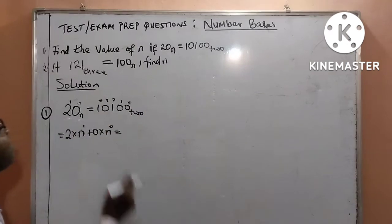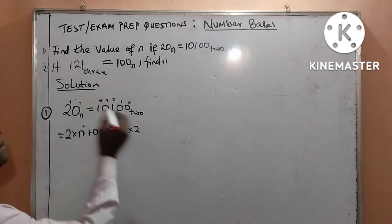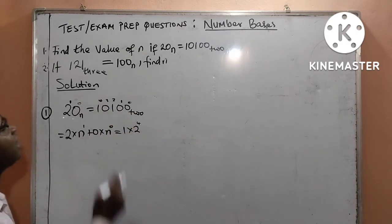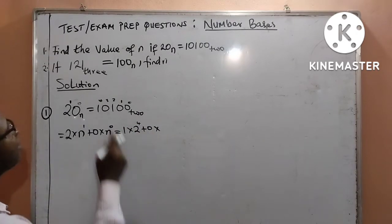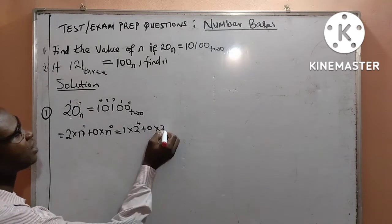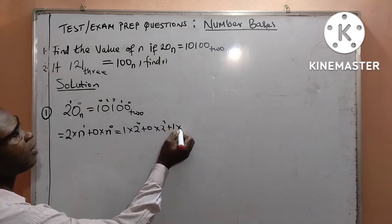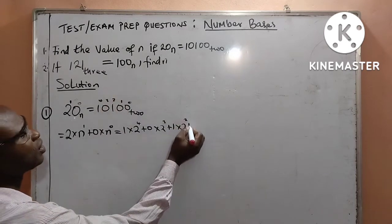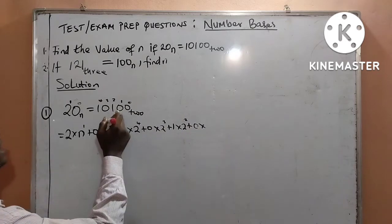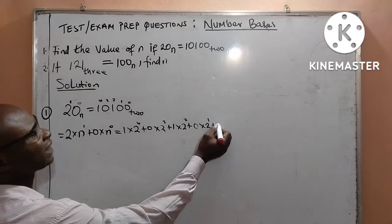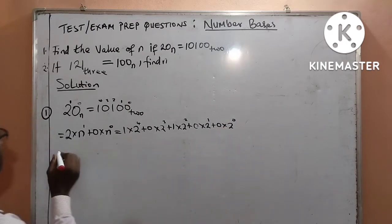It is equal to, according to the right-hand side: the first digit is 1 multiplied by the base 2 raised to power 4. Then next is 0 — of course it will give us 0, but we have to work out everything — multiplied by the base raised to power 3, plus 1 multiplied by the base raised to power 2, plus 0 multiplied by 2 raised to power 1, and lastly 0 times the base raised to power 0.